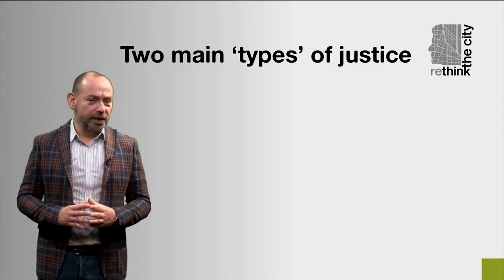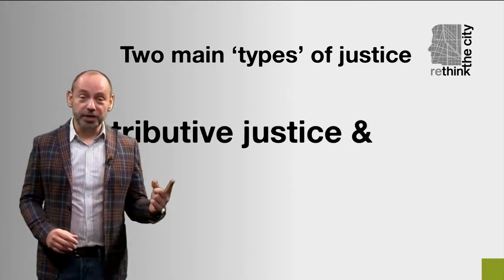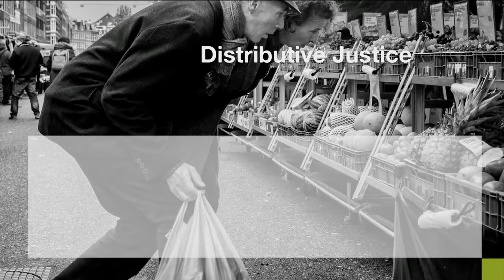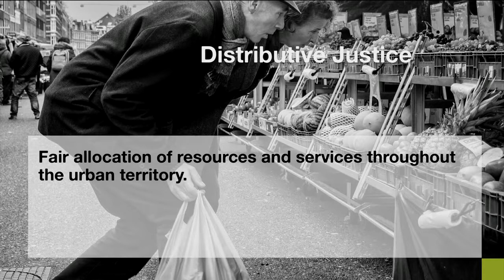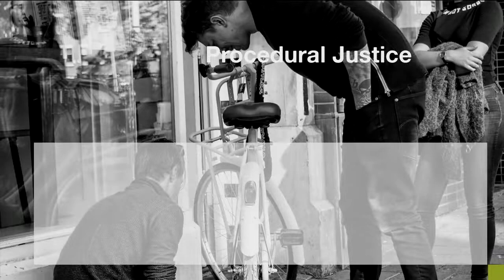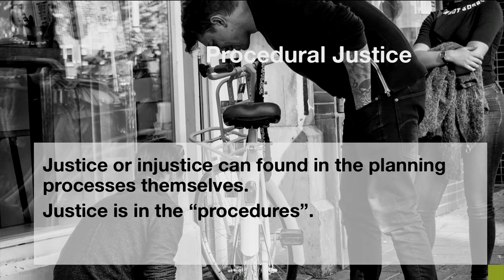Spatial justice is a relatively new area of study that focuses on mainly two types of justice: distributive justice and procedural justice. In distributive justice, justice is sought through the fair allocation of resources and services throughout the urban territory — resources, services, and opportunities must be fairly distributed in urban space. In procedural justice, justice or injustice can be found in the planning processes themselves, in participatory processes, and in the laws and regulations of a city. Justice here is in the procedures.